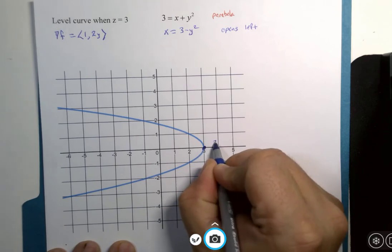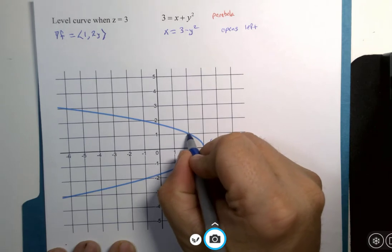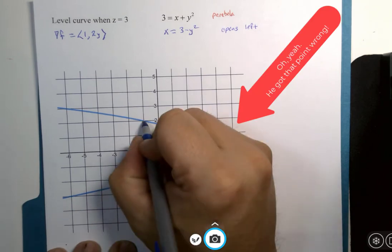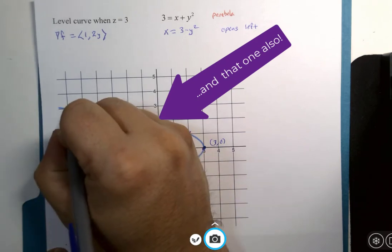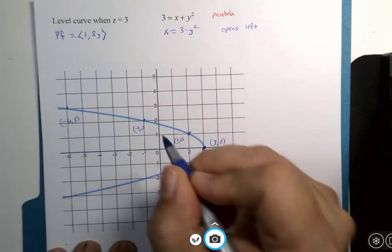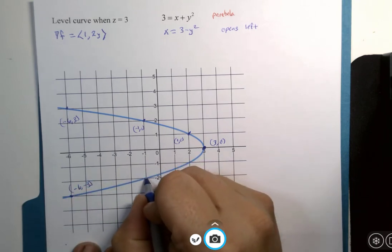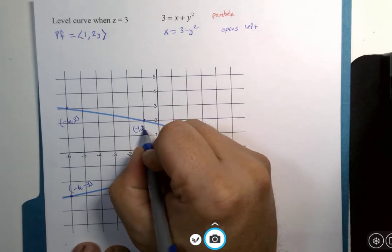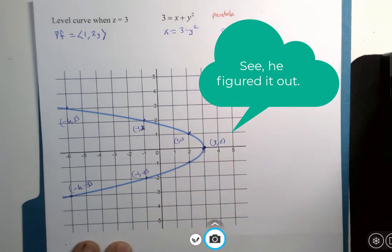Its vertex is at 3, 0. It has a nice point here at 1, 0. There's another nice point at negative 1, 2, and negative 6, 3, and negative 6, negative 3, and negative 1, negative 2, etc. You can find, list those coordinates.